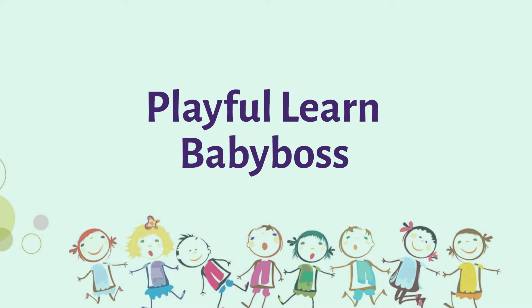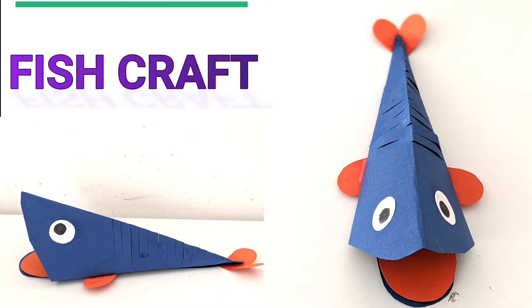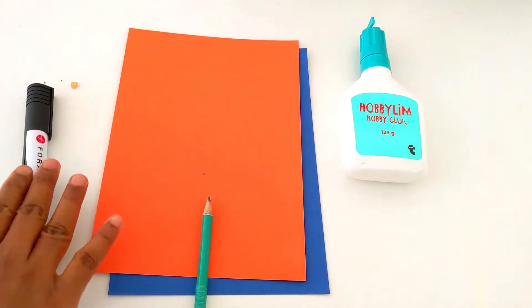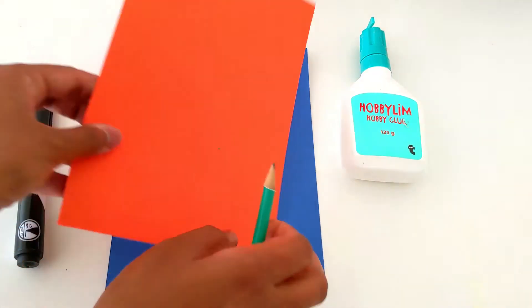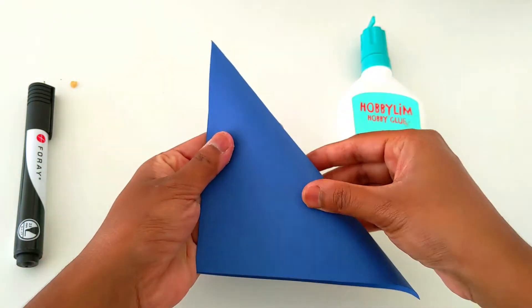Hello, welcome to Playful Learn Baby Boss. Today we are going to learn how to make a paper fish. I have taken orange and blue papers and glue. Now I'm going to take the square paper.